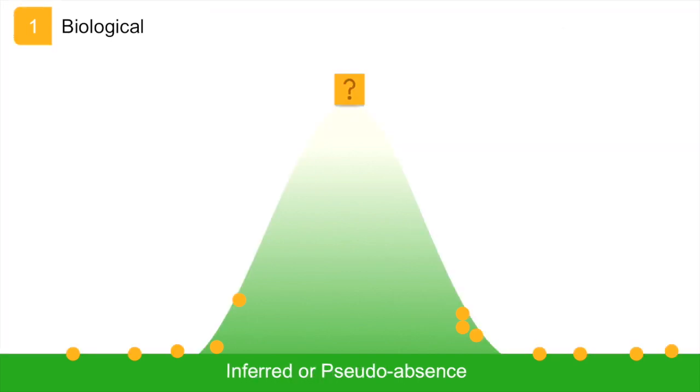If you do not have true absence data, but you do want to use an algorithm that compares the environmental conditions of occurrence sites with those of absence sites, you have to make up absence data. For example, if you are unable to get to a survey site, you may need to infer your absence data. This is called pseudo-absence data. I will now discuss how to do this.